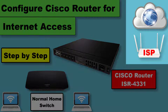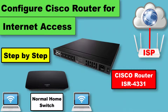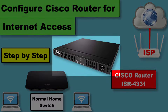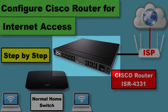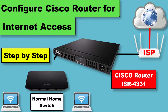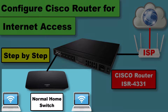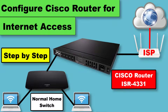Here you can see I have a home ISP router and it's connected to the internet. Now I am going to install and configure my Cisco ISR 4331 router with my home ISP router. Then I connect my Cisco router to a basic unmanaged home switch where multiple PCs are already connected and they will get access to the internet via the Cisco router. So let's start.